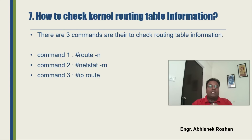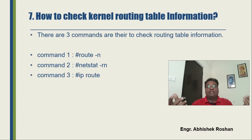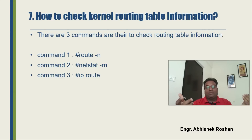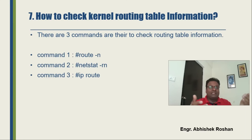The next question: how to check the kernel routing table information. There are three commands: `route -n`, `netstat -rn`, and `ip route`. Any one of these can retrieve routing table information.